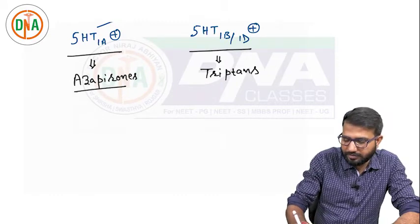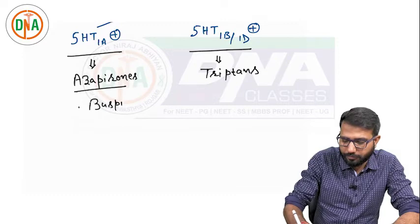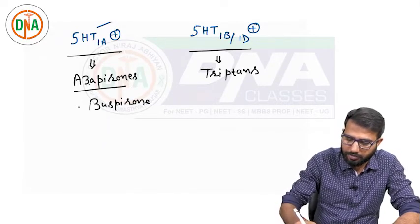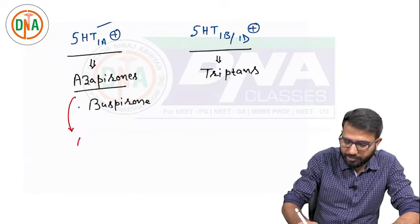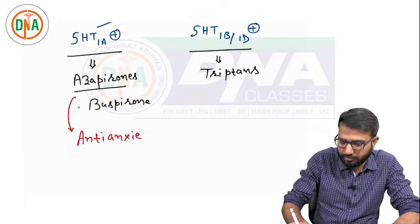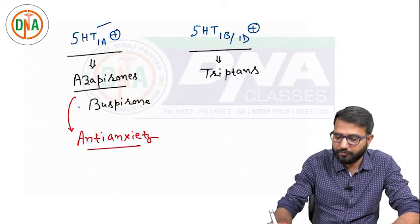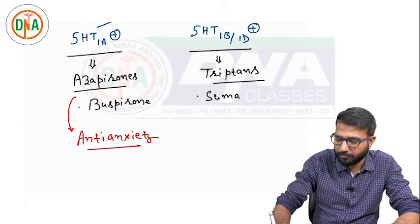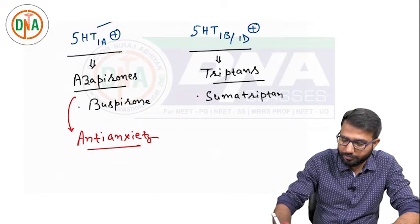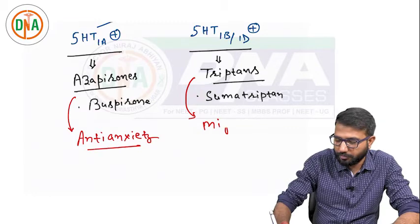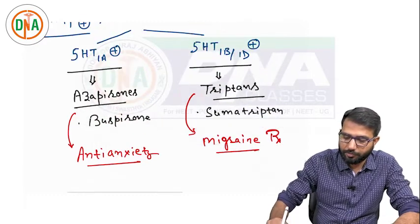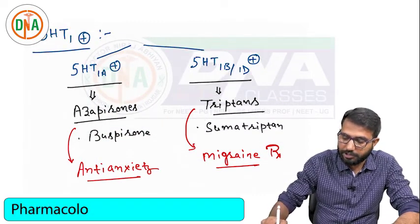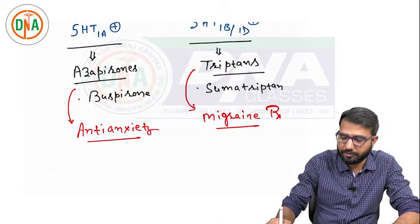Azapyrones — buspirone-like drugs — have already been discussed as anti-anxiety agents. Then for 5-HT1B/1D, triptans such as sumatriptan are used for terminating the acute attack of migraine. So azapyrones are for anti-anxiety and triptans are for migraine treatment; both will be discussed in their respective sections.